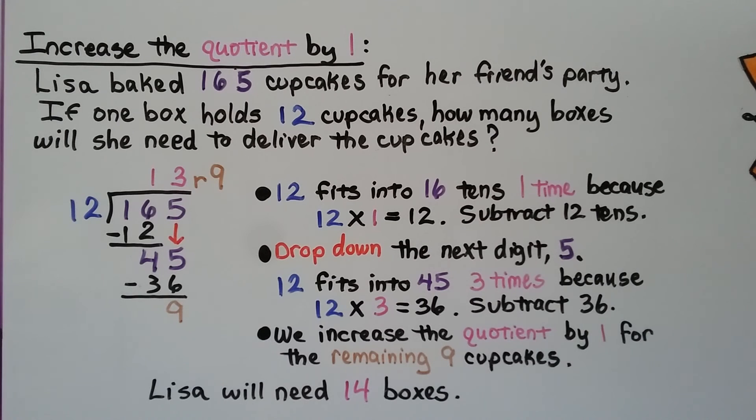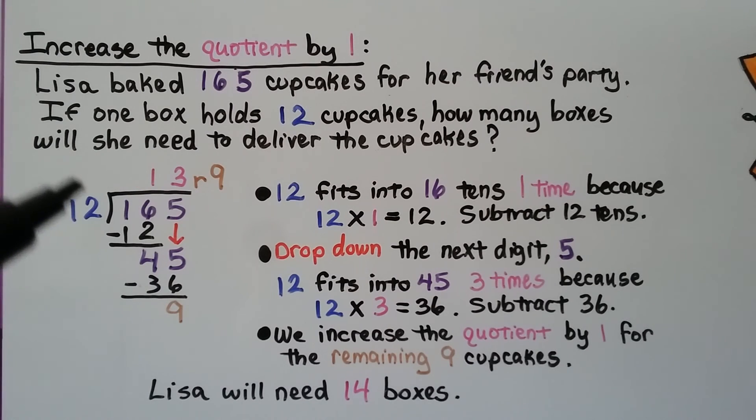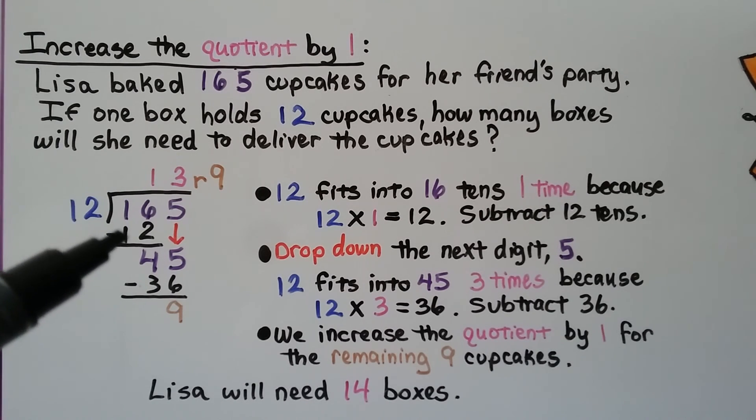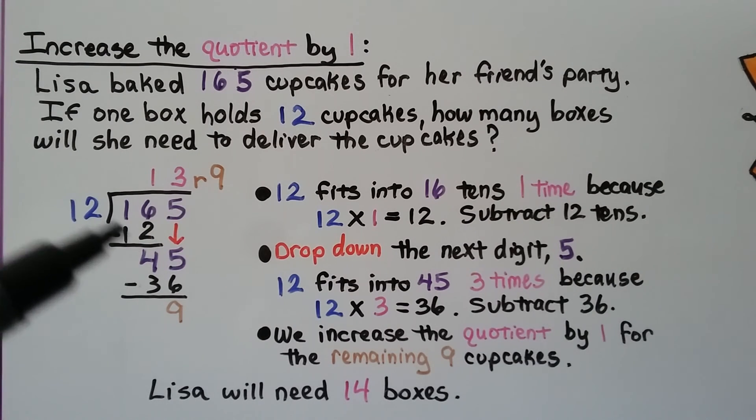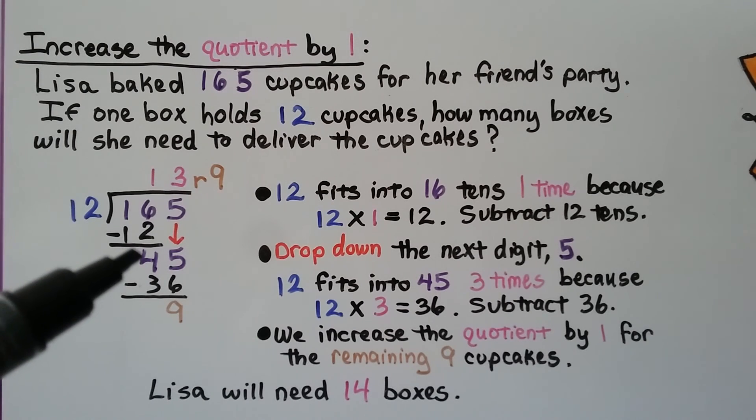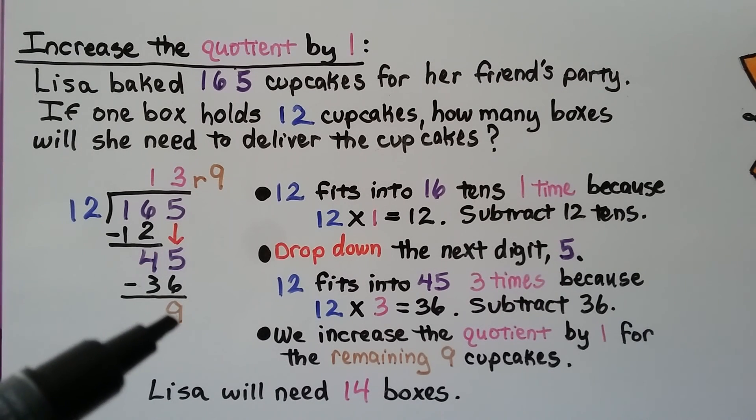Here's an example of increasing the quotient by one. Lisa baked 165 cupcakes for her friend's party. If one box holds 12 cupcakes, how many boxes will she need to deliver the cupcakes? We have 165 divided by 12. And the 12 fits into the 16 10s one time. So we write a 1 up here. And 12 times 1 is 12 and we subtract the 12 10s. We get 4. It's the 5's turn to come down. Now we have 45 divided by 12. And 12 fits into 45 three times. And 12 times 3 is 36. We subtract and get 9.